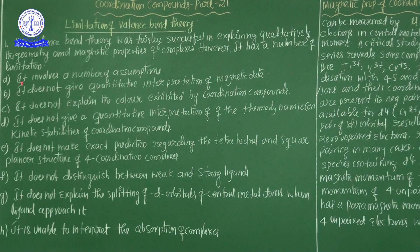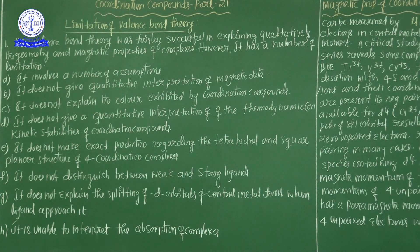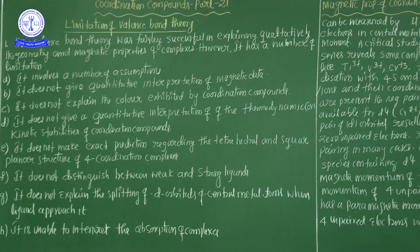The fifth limitation: it does not make exact predictions regarding tetrahedral and square planar structures of four-coordination complexes. If a complex compound contains coordination number four, it could exist as tetrahedral or square planar, but the theory cannot predict this properly. VBT theory suggests that either tetrahedral or square planar geometry is possible, but gives no exact prediction — it does not explain what determines the geometry for coordination number four.